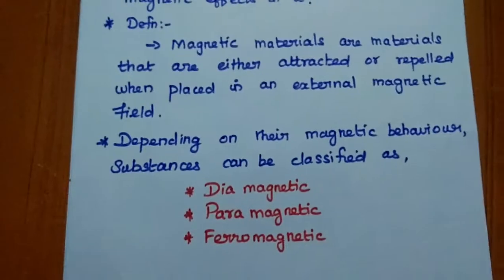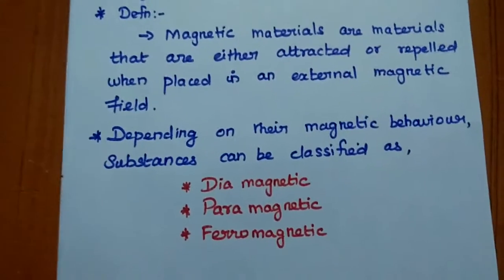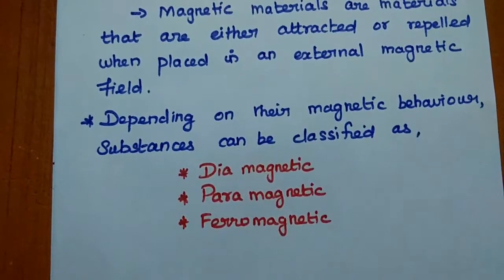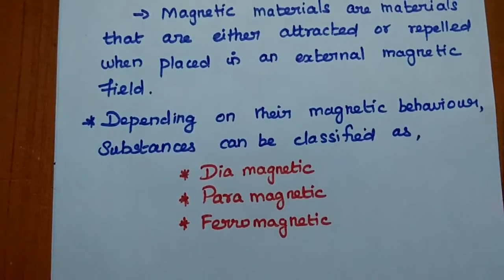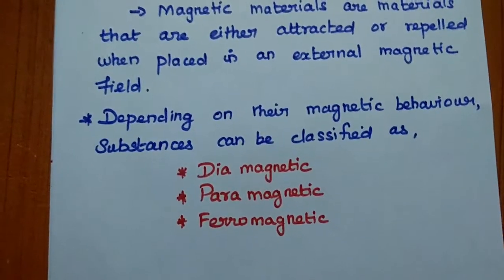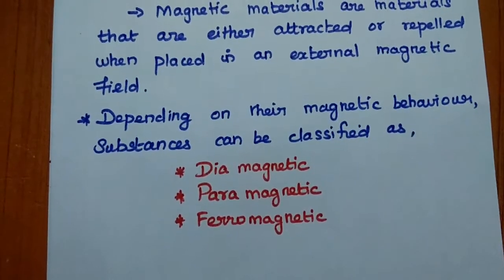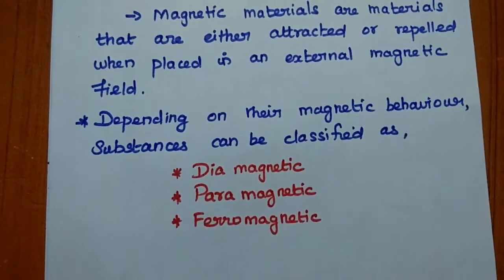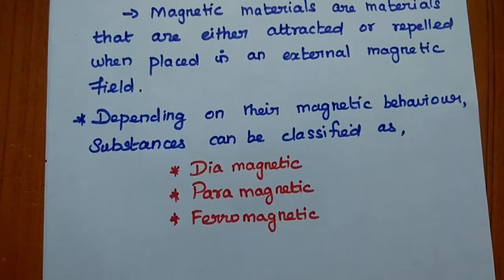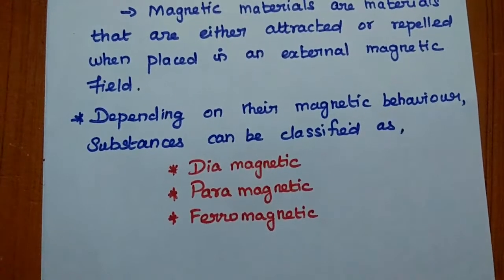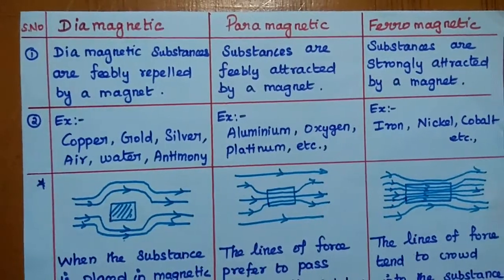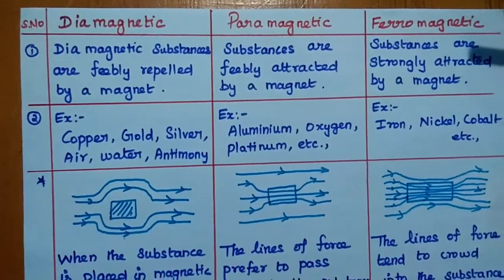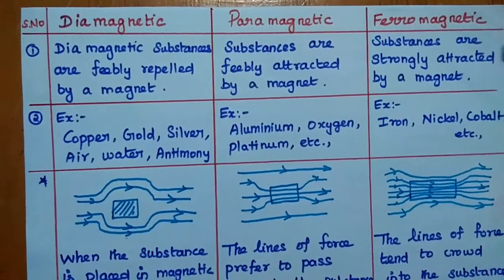Depending on their magnetic behavior, the substances can be classified into three major categories: diamagnetic, paramagnetic, and ferromagnetic. Let's see the comparison between these three magnetic materials.